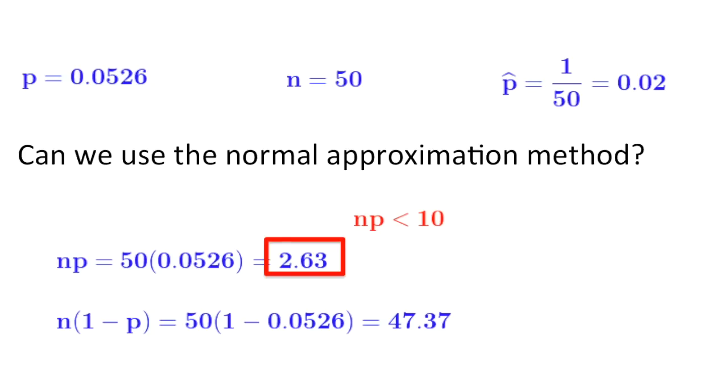And we'll use that sampling distribution to determine what proportion of samples have a sample proportion more extreme. So, in other words, the difference between the population proportion and the sample proportion is more extreme than the one that we observed here. In other words, the difference between 0.0526 and 0.02. So, let's go to StatKey.